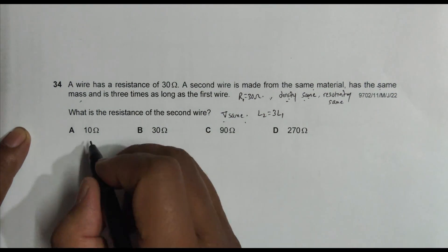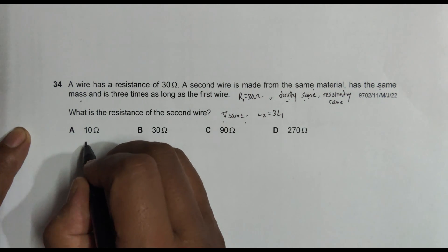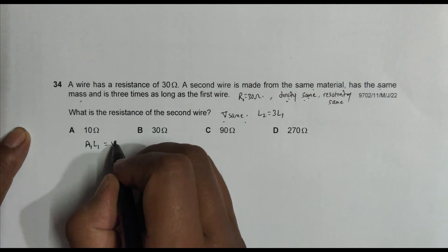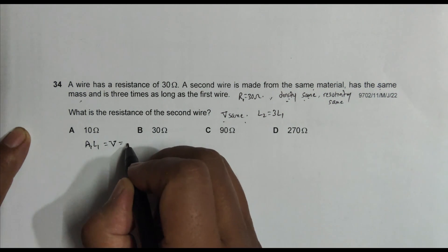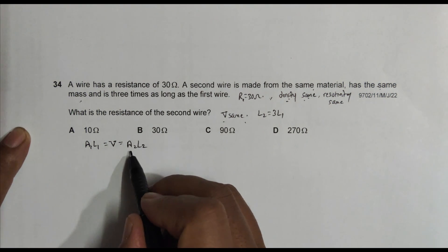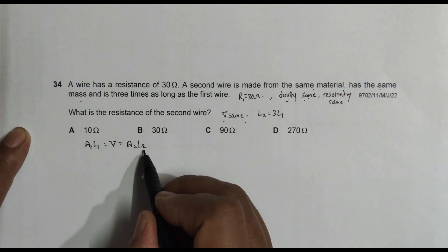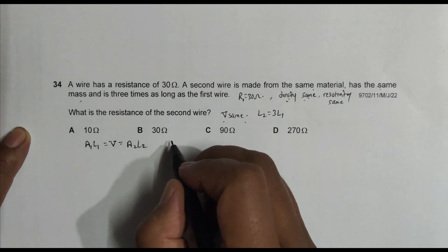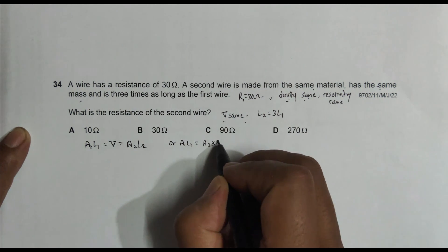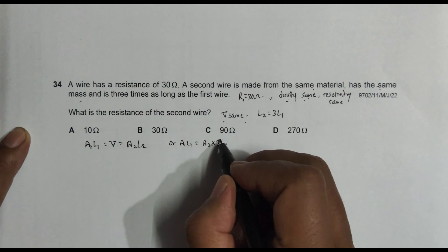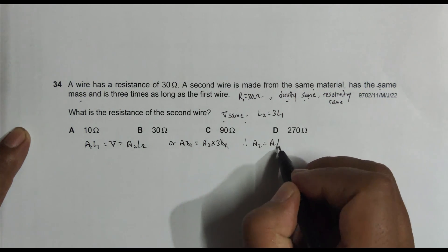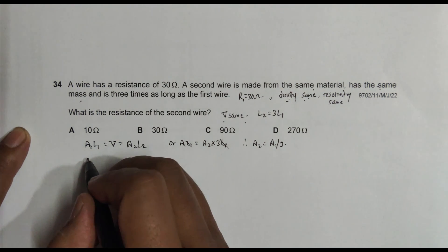Same volume means that if A1 is the cross-section of the first wire and L1 is the length, the volume equals A1 times L1, and this also equals A2 into L2 because A2 is the cross-section of the second wire and L2 is the length of the second wire. So A1L1 equals A2 into 3L1, which gives us A2 equals A1 by 3.